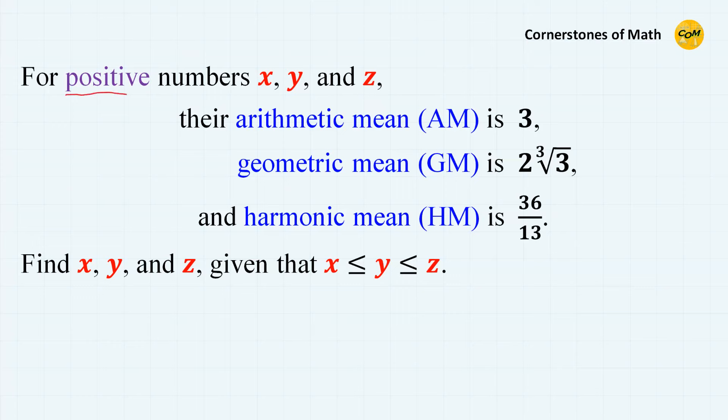For positive numbers x, y, and z, their arithmetic mean is 3, geometric mean is 2 times cube root of 3, and harmonic mean is 36 divided by 13.